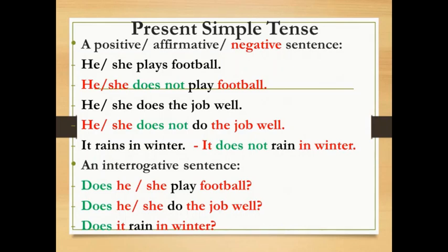Notice: in the positive affirmative sentence, the main verb always takes an S, because we have the third person singular — he, she, it — plays, does, and rains. But when we use the auxiliary 'does', the main verb is without S, in the infinitive, in the base. في حالة النفي والاستفهام أستعمل الفعل المساعد does والفعل الرئيسي يكون بدون S في صيغة المصدر.